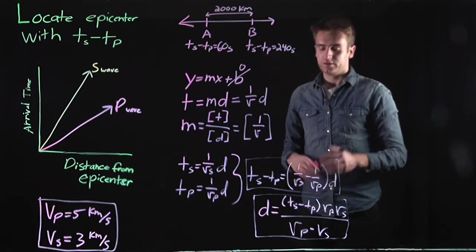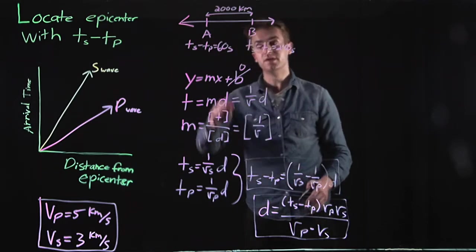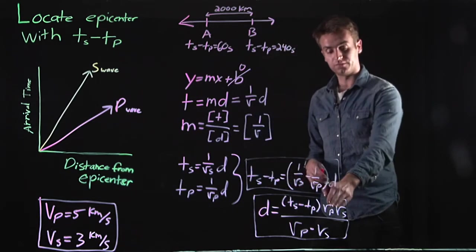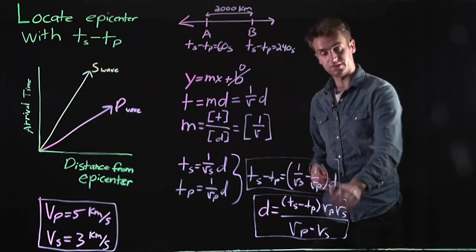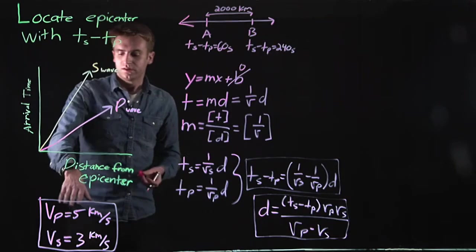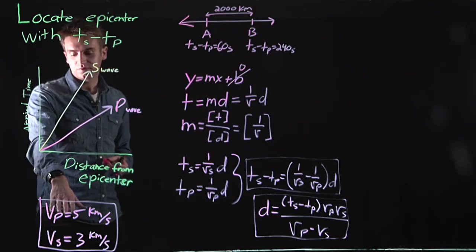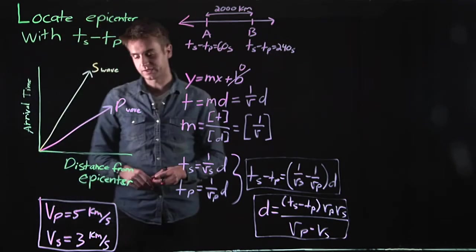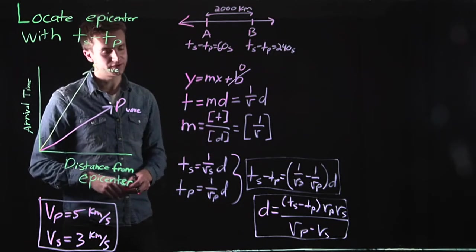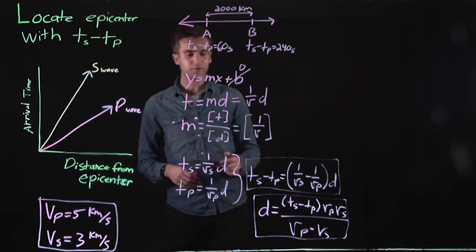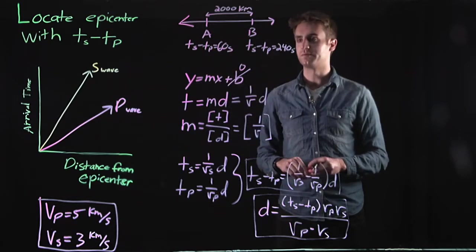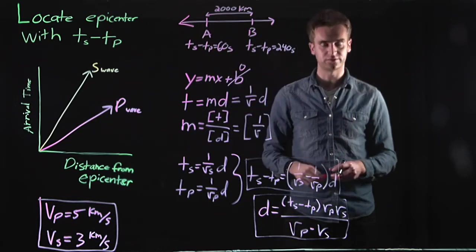We know Ts minus Tp — it's given to us from the stations. What we need are the velocities of the P wave and the S wave. From experimental study, P waves generally travel through the Earth at about 5 km per second, and S waves at 3 km per second. Now we have all the information needed to find how far away the earthquake was from Station A and Station B.